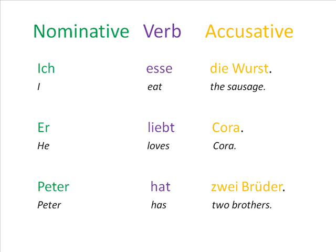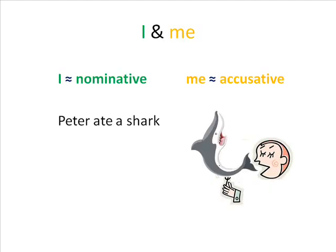In English, one of the few places you can still see the remnants of a case system is in the pronouns I and me. Although English is not considered to have a nominative case, the word 'I' is generally used in English where a nominative would be used in German, and 'me' is generally used where one of the other cases would be used — particularly the accusative or the dative. So, as a rough rule of thumb, if you could swap the noun or pronoun you want to use for an 'I' in English, you should be using a nominative in German. For instance, with 'Peter ate a shark,' you could say 'I ate a shark,' so you know to put Peter in the nominative. On the other hand, you would not say 'Peter ate I,' so you wouldn't put 'shark' in the nominative.